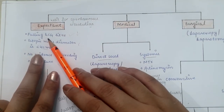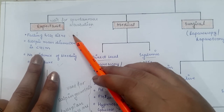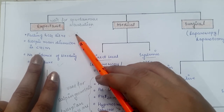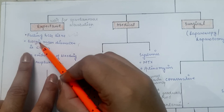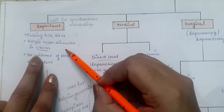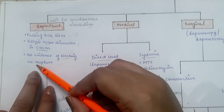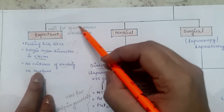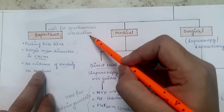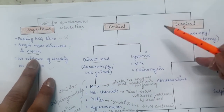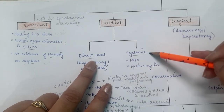For expectant management of unruptured tubal ectopic: if HCG is falling, the ectopic mass diameter is less than 4 cm, and there is no evidence of bleeding or rupture, wait for spontaneous resolution.